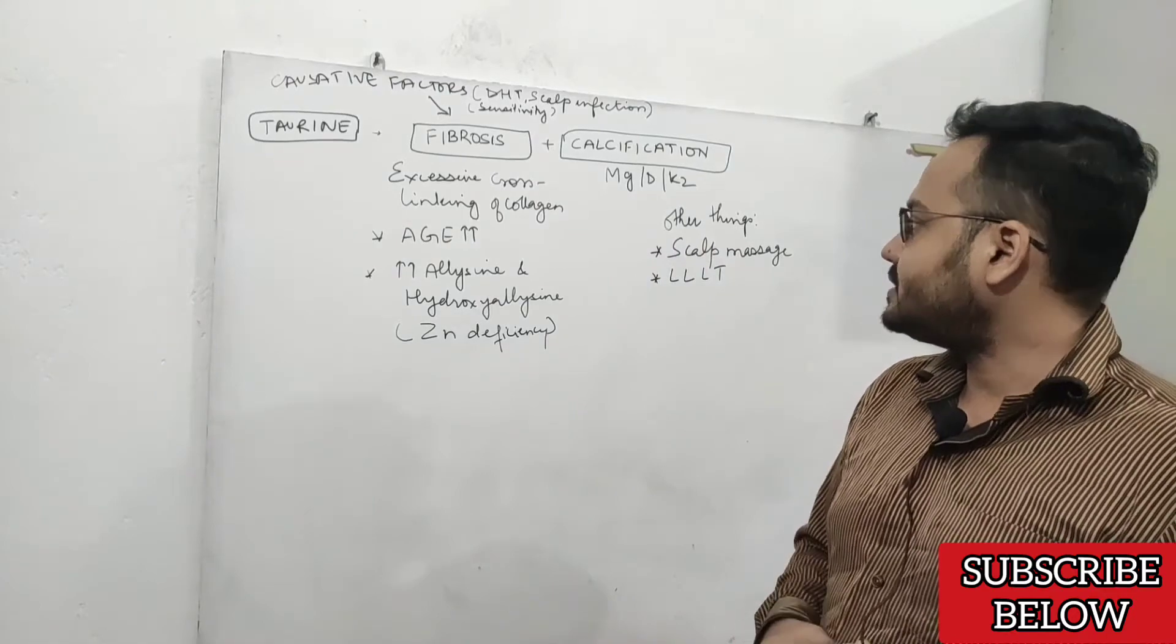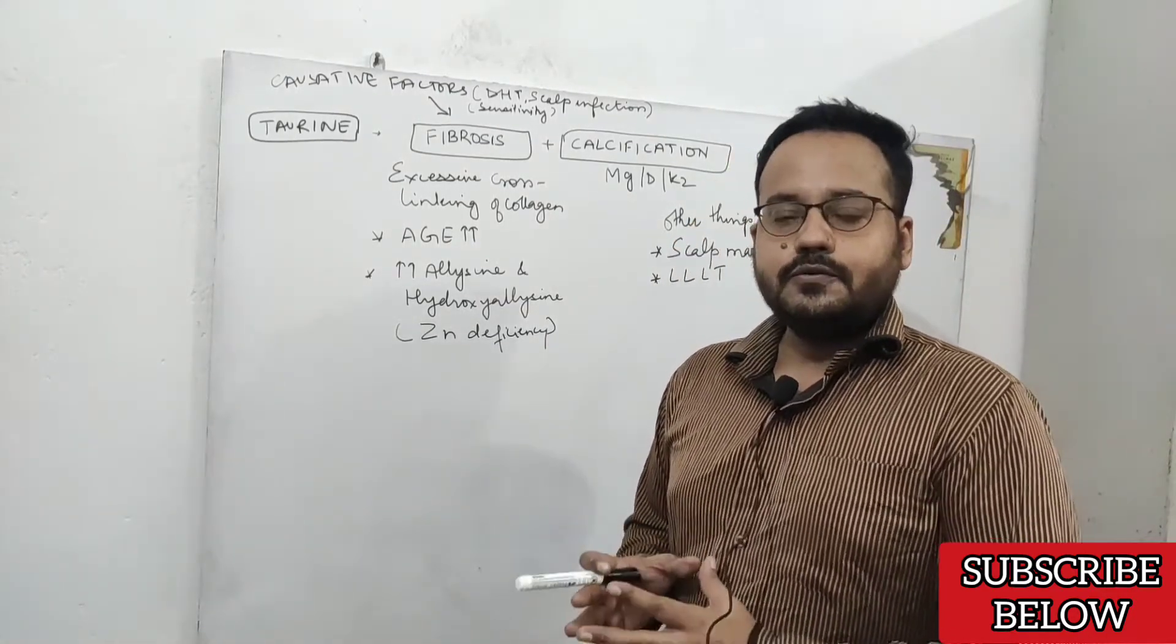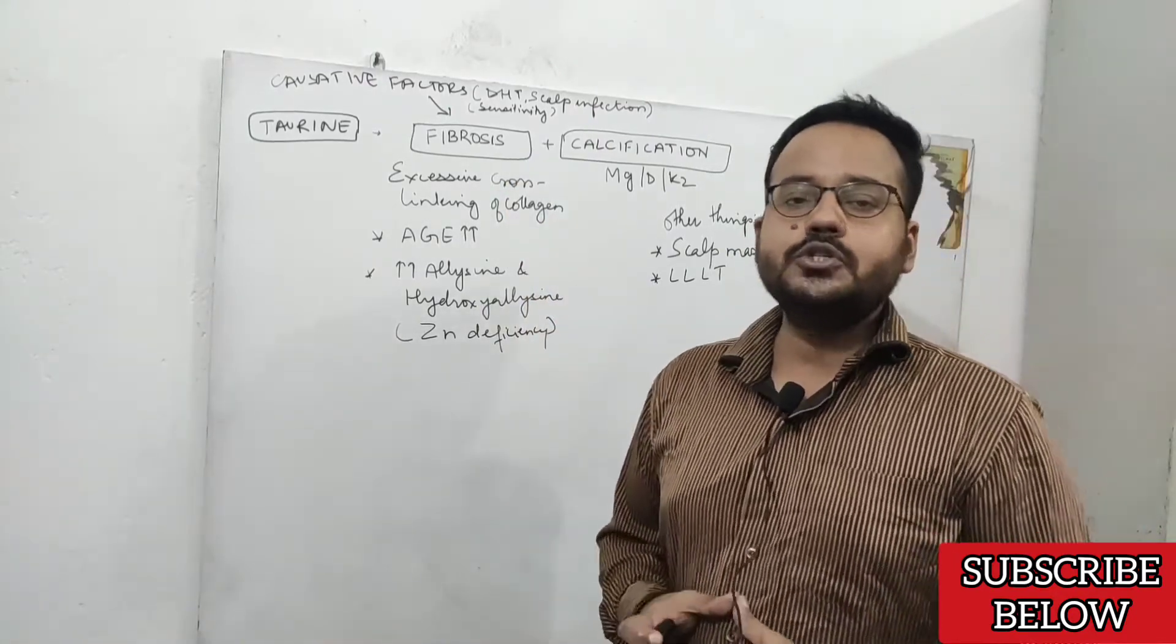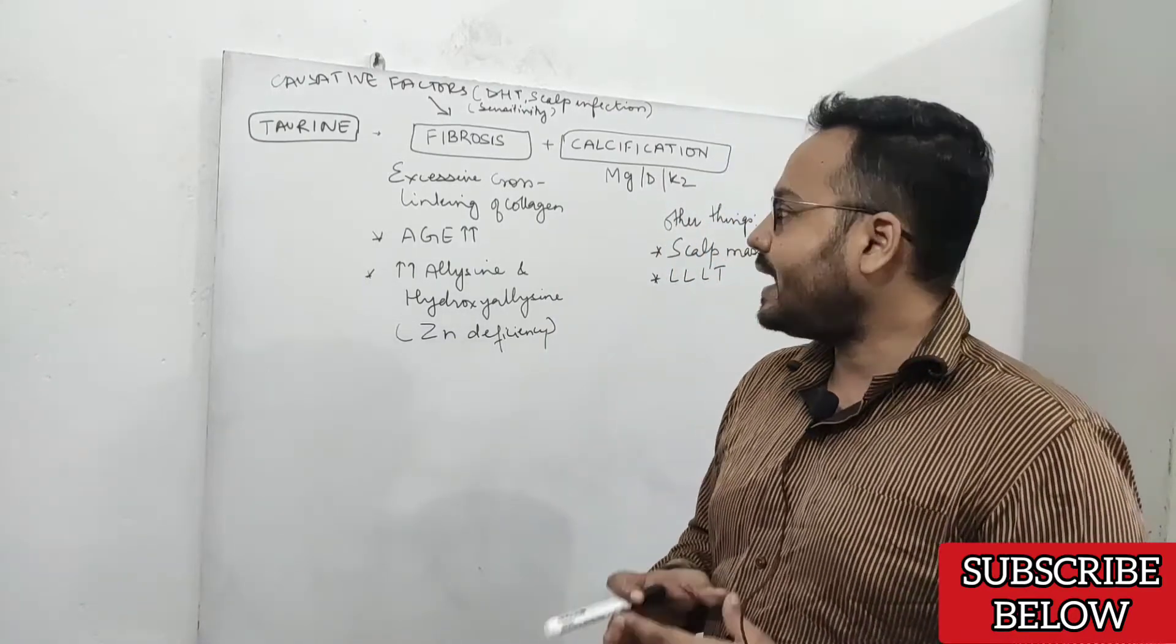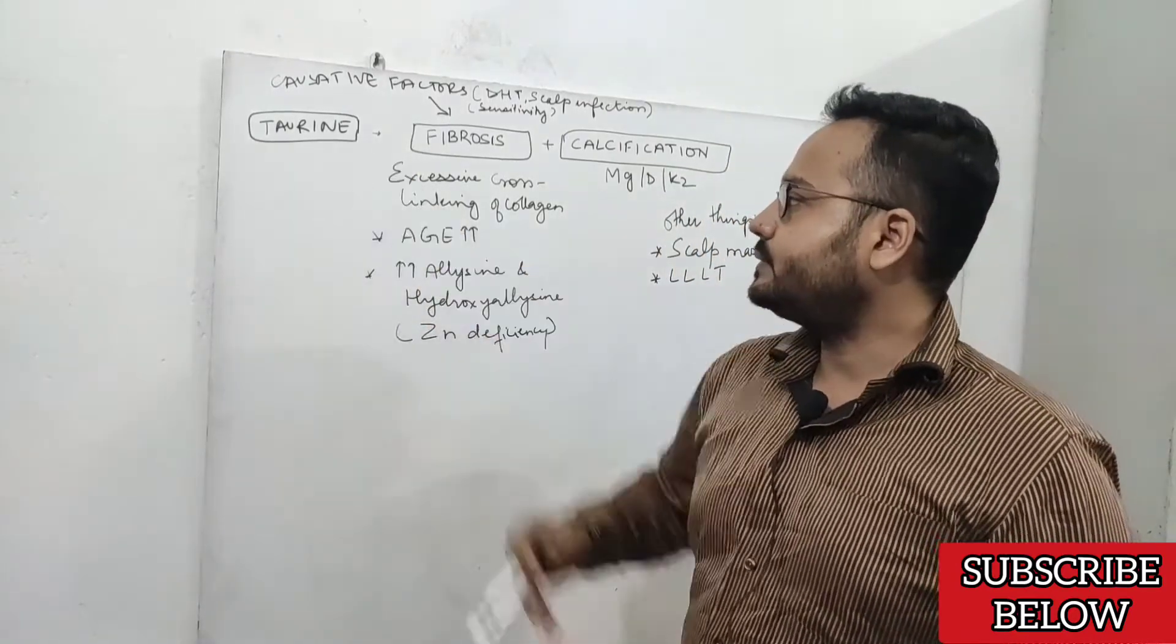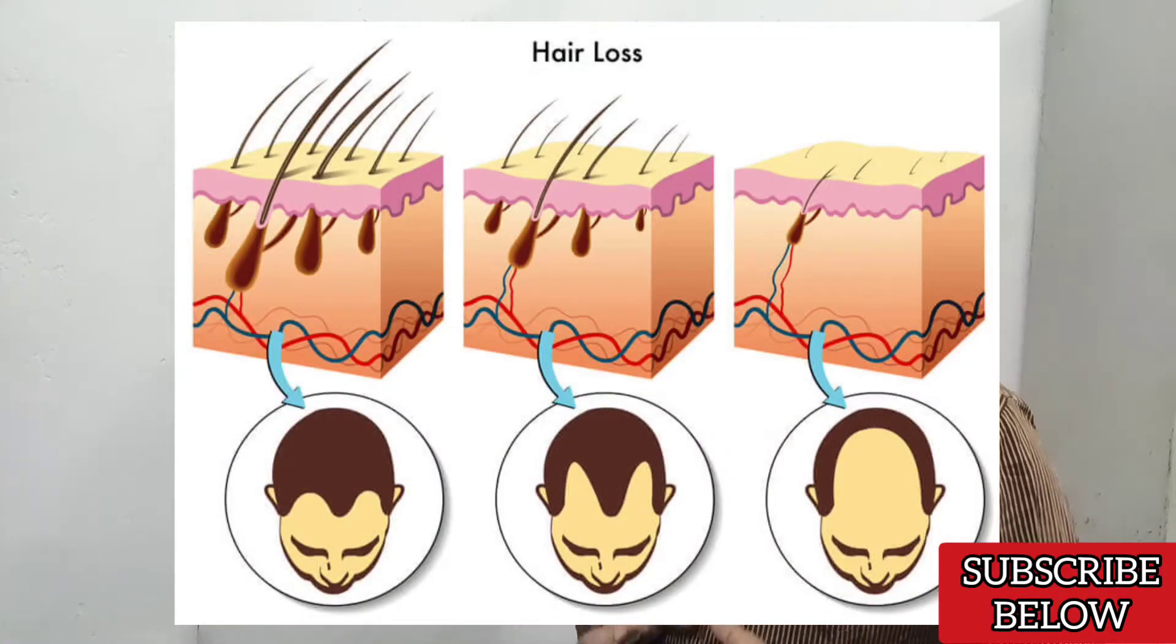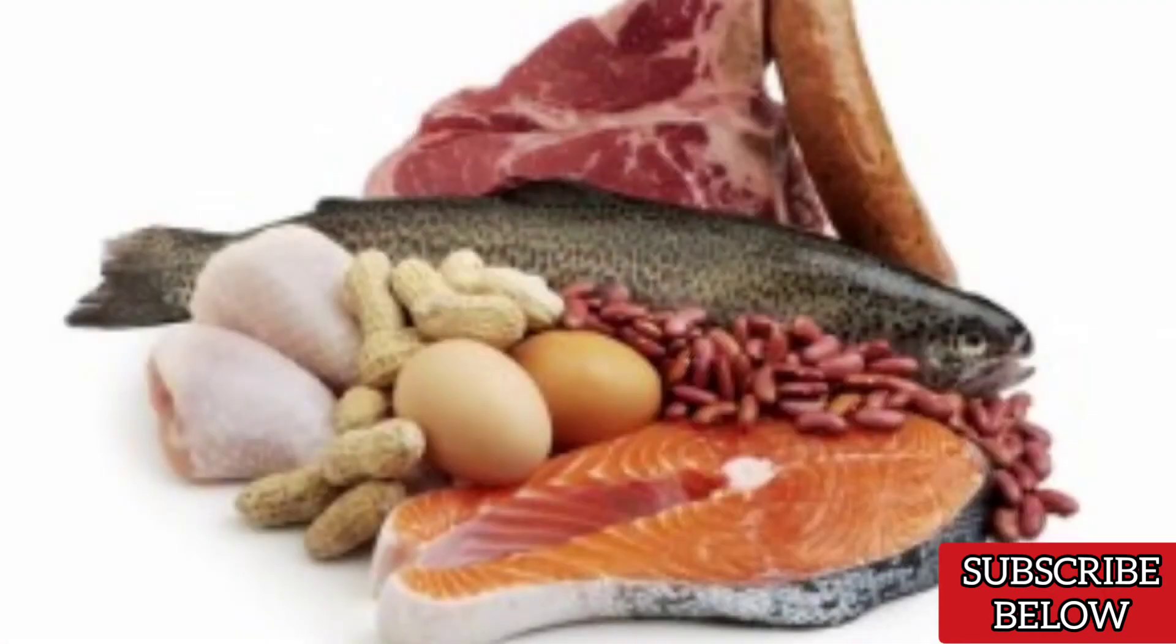One of the most important nutrients which exert anti-fibrotic effect and helps in regrowing your hair is taurine. Taurine is mainly synthesized by cysteine, and cysteine is considered one of the most important amino acids for your hair. It's a sulfur-containing amino acid.